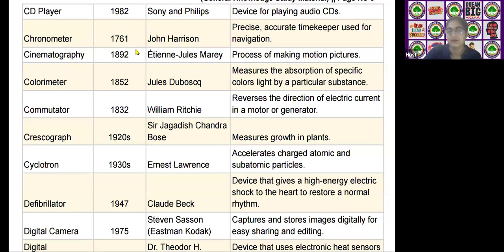The next scientific device is the colorimeter, invented by Julius Duboscq in the year 1852. It is used to measure the absorption of a specific color's light by a particular substance.